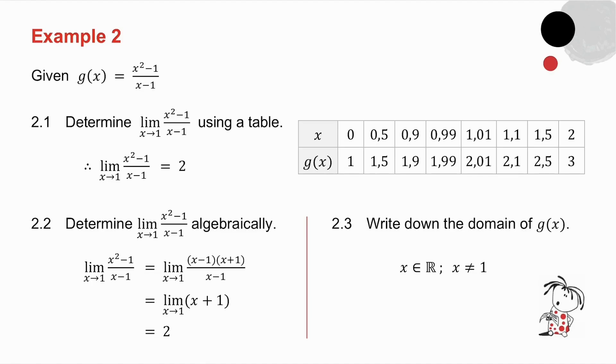2.3, I ask you to write down the domain of g of x. Well, g of x can be simplified to x plus 1. In other words, it's another linear function. So what is my domain of a linear function? It's just x an element of r. However, g of x was given in this form up here. What is x not allowed to be? x is not allowed to be 1 because I may not divide by 0.